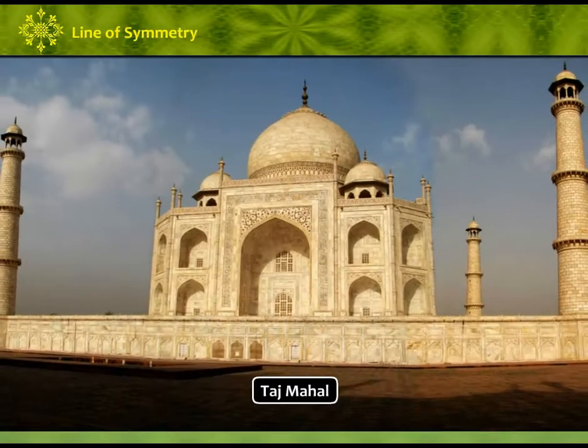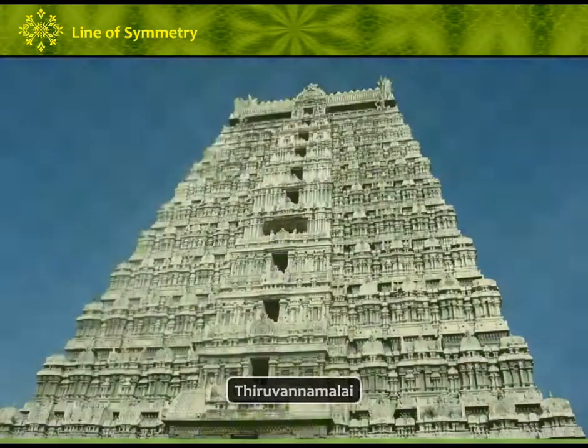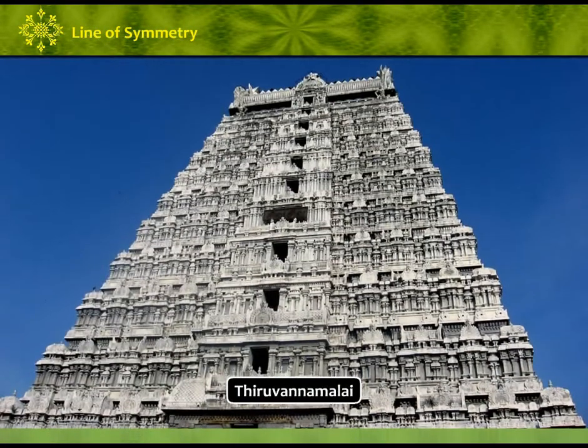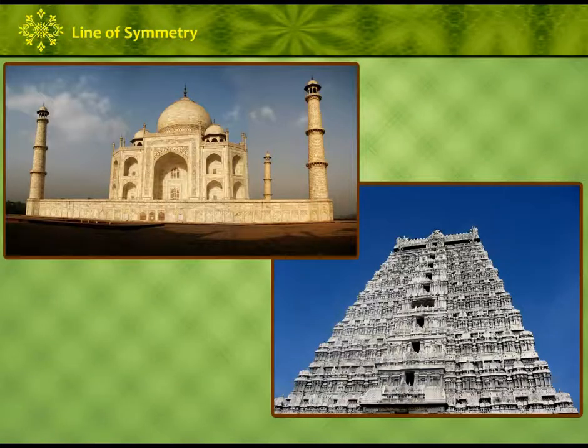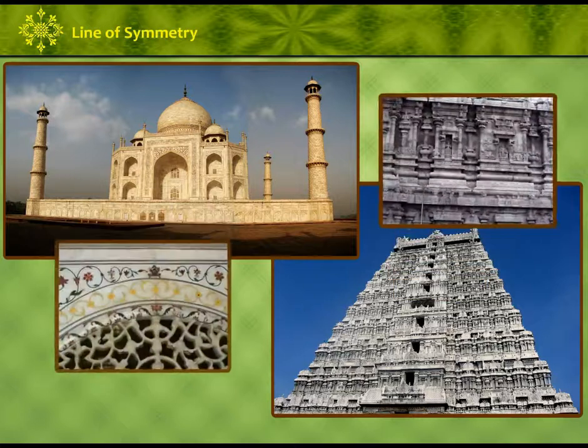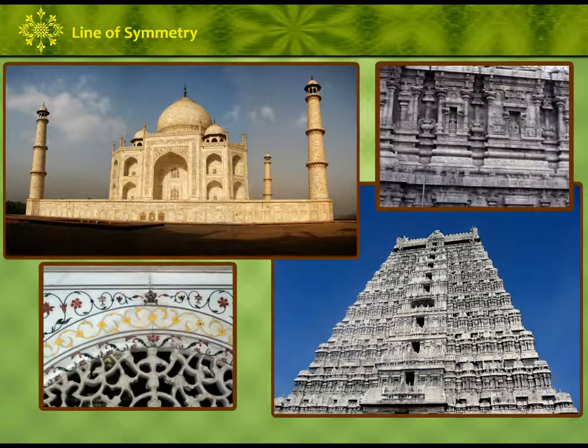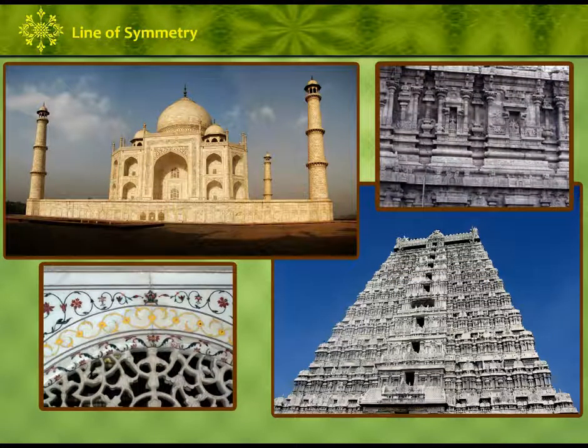Look at this Taj Mahal and Tiruvanna Malai. They look so beautiful, aren't they? These pictures of architectural marvel are beautiful because of their symmetry as here certain figures are with evenly balanced proportions.